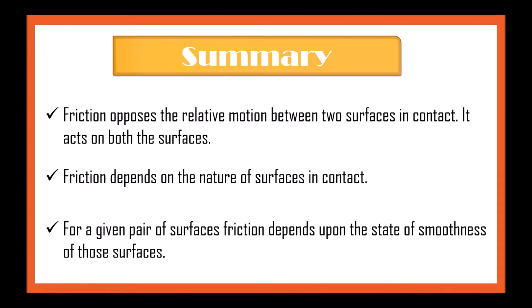Friction opposes the relative motion between two surfaces in contact. It acts on both the surfaces. Friction depends on the nature of surfaces in contact. For a given pair of surfaces, friction depends upon the state of smoothness of those surfaces.